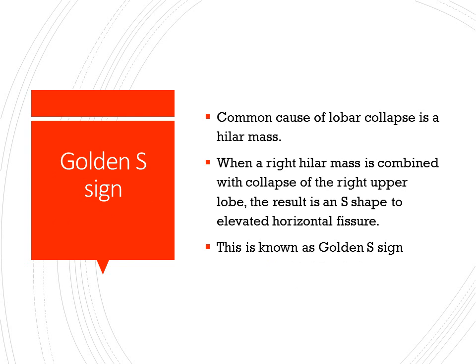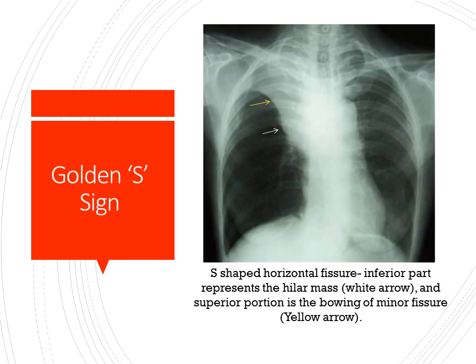The Golden S Sign is also described in right upper lobe collapse. Usually if there is a hilar mass which obstructs the right upper lobe bronchus to produce right upper lobe collapse, the inferior portion of the minor fissure is seen bulging and the superior portion of the minor fissure is seen bowed upwards. This picture shows the Golden S Sign where you can see the bulging of the inferior portion of the minor fissure bowing upwards with a shadow in the superior portion of the right upper zone.